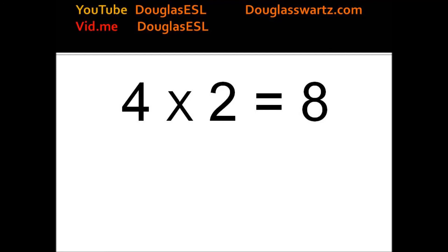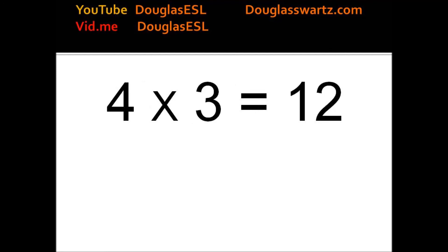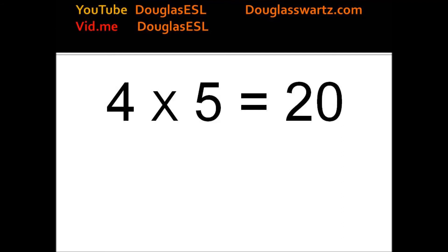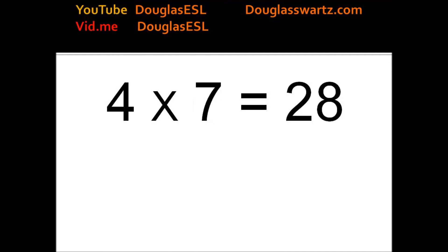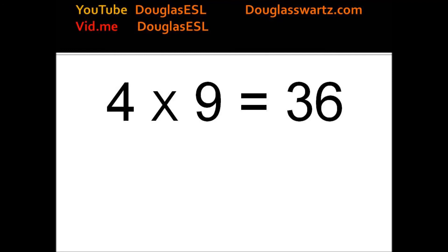4 times 2 equals 8. 4 times 3 equals 12. 4 times 5 equals 16. 4 times 6 equals 24. 4 times 7 equals 28. 4 times 8 equals 32. 4 times 9 equals 36.